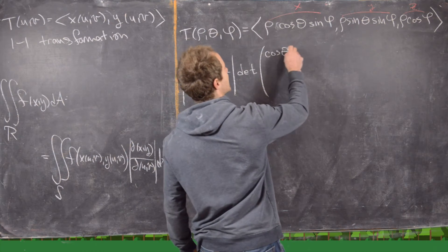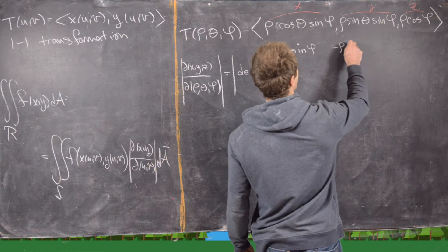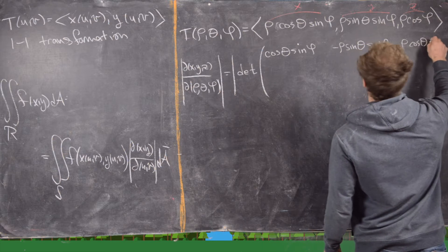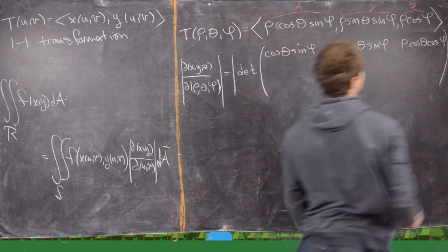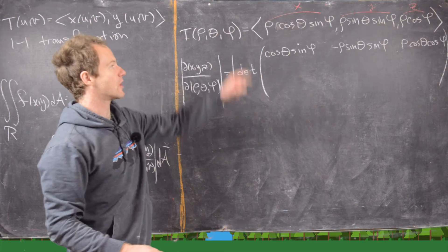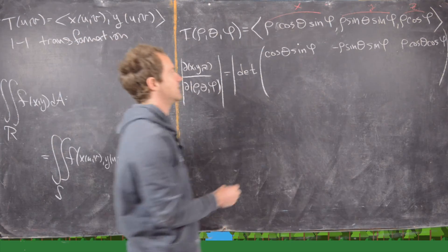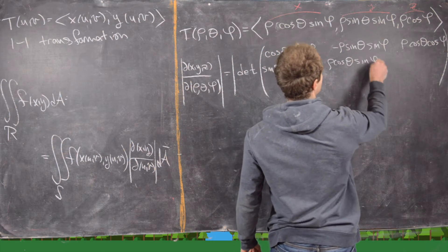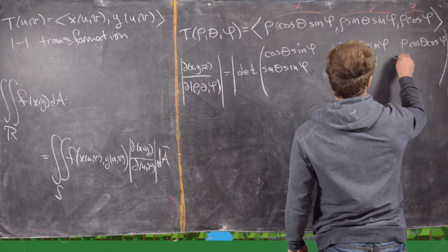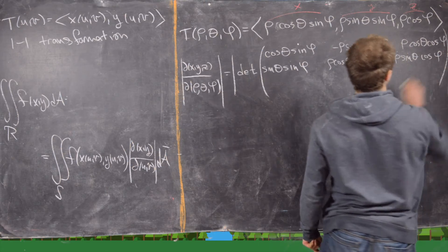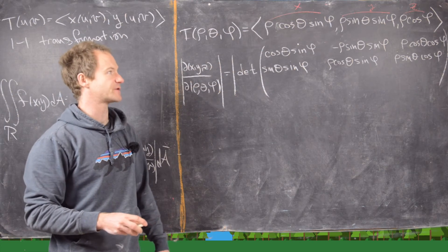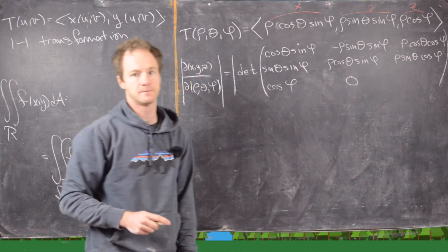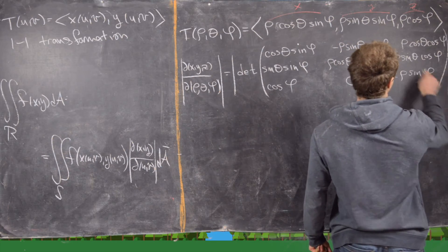For the X-component: with respect to ρ we get cos θ sin φ; with respect to θ we get −ρ sin θ sin φ; with respect to φ we get ρ cos θ cos φ. For the Y-component: with respect to ρ we get sin θ sin φ; with respect to θ we get ρ cos θ sin φ; with respect to φ we get ρ sin θ cos φ. For the Z-component: with respect to ρ we get cos φ; with respect to θ we get 0 since there is no θ dependence; with respect to φ we get −ρ sin φ.